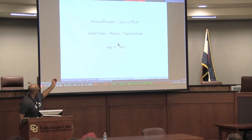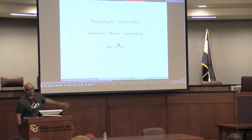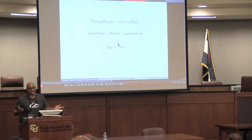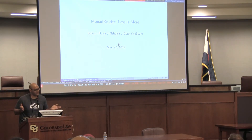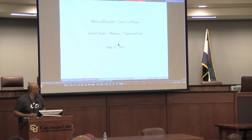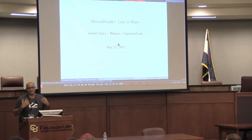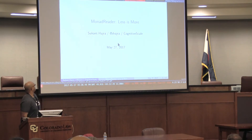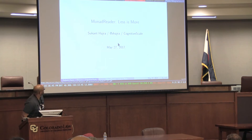I'm Sukant Hajra. I'm shajra on Twitter. The company I work for is Cognitive Scale — we're in Austin, Texas. We do applied machine learning and NLP for enterprise domains, and we have a commitment to type-checked functional programming. We do a good amount of work in Scala, and my team does some work in Haskell. So if that rings your bell, find me at the conference and we'll talk.